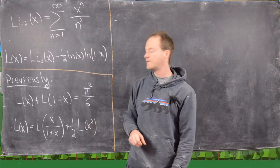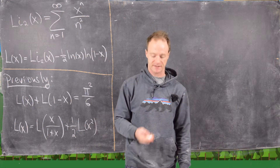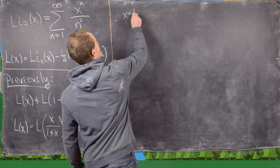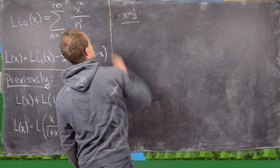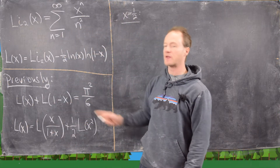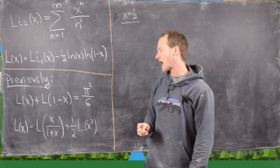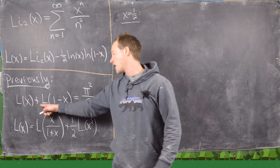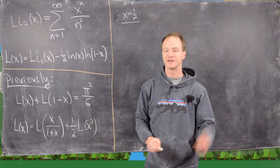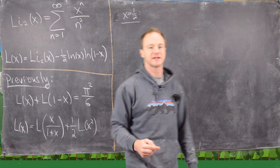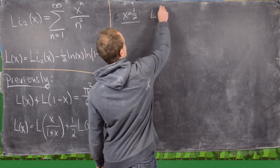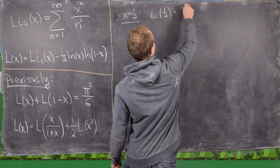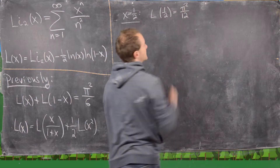Now we're going to look at these two functional equations for two cases. The first one will be x equals one half. Notice the first equation is really simple if x is a half: we get L of one half plus L of 1 minus one half, which is also one half, equals pi squared over 6. That's easy to solve to get L of one half equals pi squared over 12.